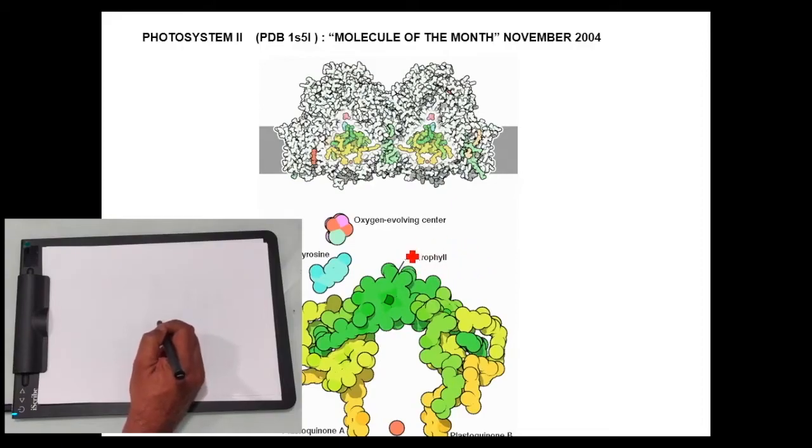Whenever I want to annotate, I just put the pen down. I just want to round off over here. And then I have to say this is chlorophyll.